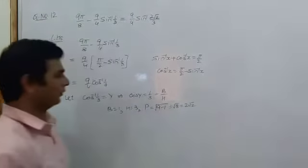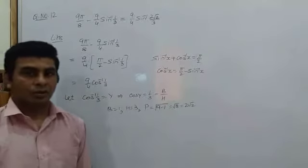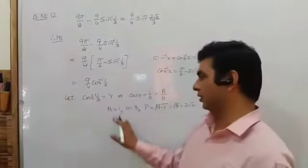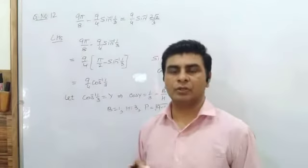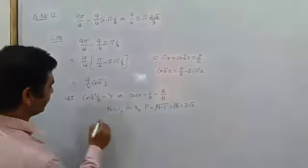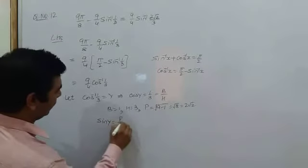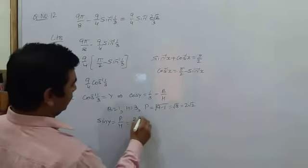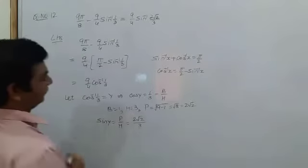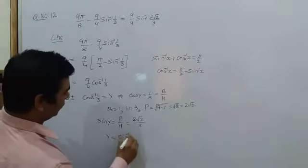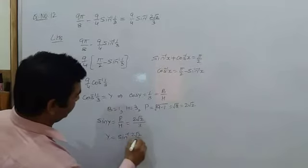So perpendicular is now 2 root 2, base is 1, hypotenuse 3. So we can find the value of sin y as well, which is given by sin y is equal to perpendicular upon hypotenuse and perpendicular is your 2 root 2 by hypotenuse 3. So the value of y will be sin inverse 2 root 2 by 3.